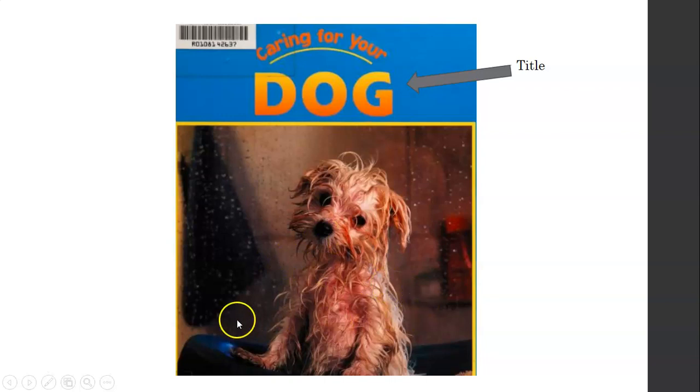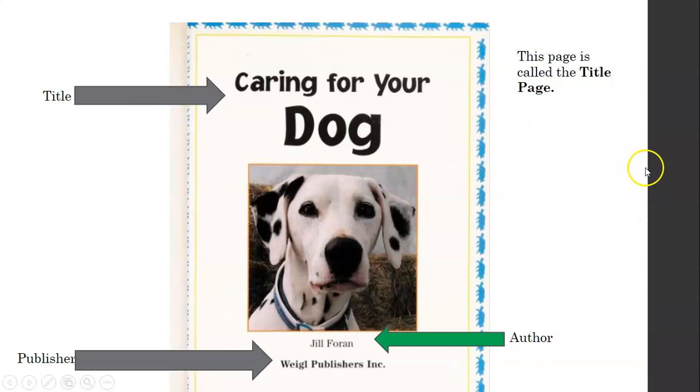Now, a lot of books have the author's name on the front. And this book does not have the author's name on the front cover. So let's see if we can find it. This page is the first page in this book, Caring for Your Dog. And it's called the title page.